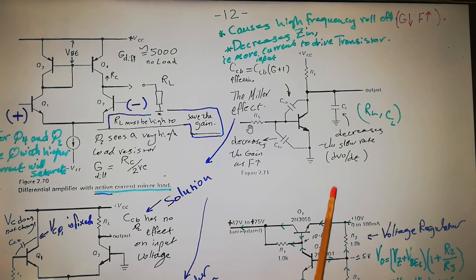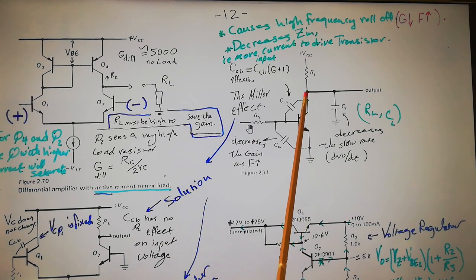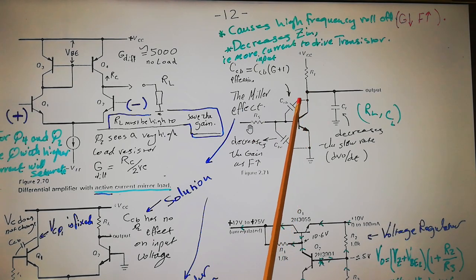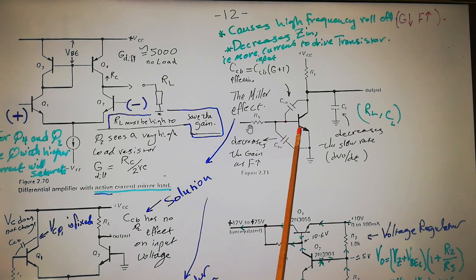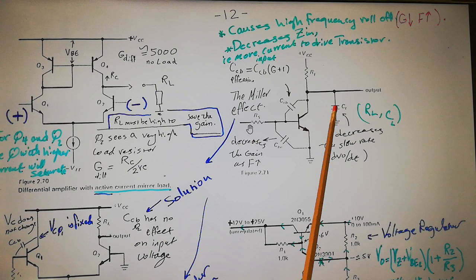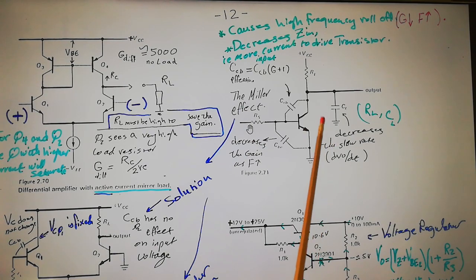Now let's move to our main topic: the Miller effect on gain and frequency response for a transistor. These are the kinds of capacitances we see in a transistor. You have Ccb — the so-called gain killer — the cap between the collector and the base. You also have Cbe, the cap between the base and the emitter, and you will always have a CL — a stray capacitance associated with the load or output.